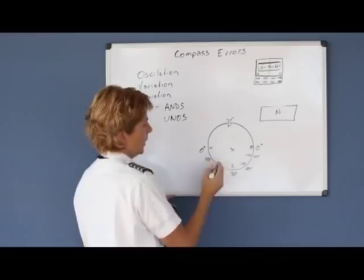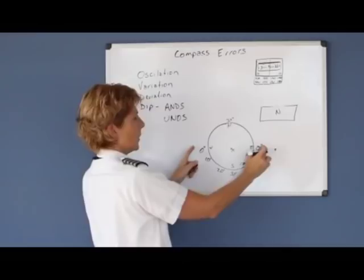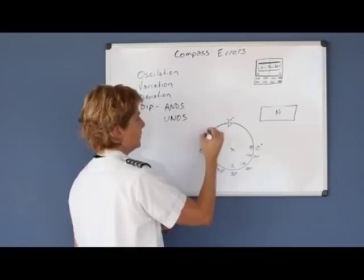The worst error is directly north or directly south, and the error decreases as we get toward east and west, and then increases again as we go back toward the north. So it would be 10 degrees of error, 20 degrees of error, 20 and 10.